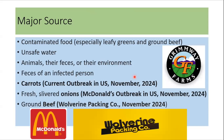Various food and animal sources have been associated with recent outbreaks. These include contaminated food — especially leafy greens and ground beef — unsafe water, animals and their environment, and feces of infected persons. Recently in 2024, organic carrots were associated with an outbreak, and there have also been outbreaks related to onions at McDonald's and ground beef at the Wolverine Packing Company.